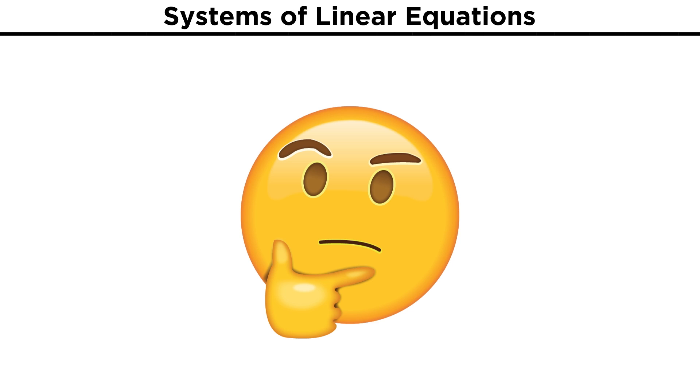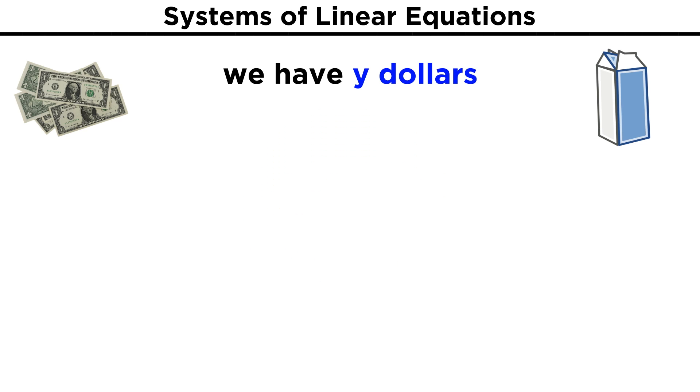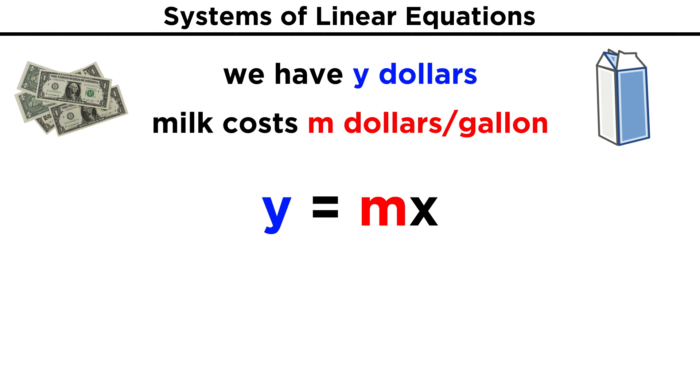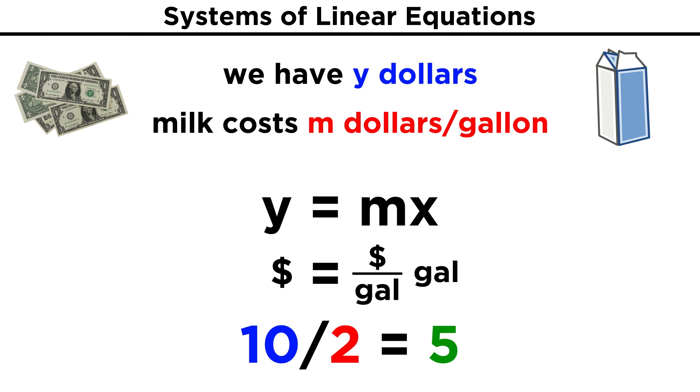To see how much structure we can get from linear equations, consider the following example. Say we need to buy some milk and we have y dollars. Milk costs m dollars per gallon, so how many gallons of milk can we get? That's easy, we just set up the equation y equals mx. M dollars per gallon times the x gallons we can afford will equal y, the money we have. If m is two dollars per gallon and y is ten dollars, since we have ten dollars, ten divided by two is five, and x equals five. We can get five gallons of milk with our ten dollars.